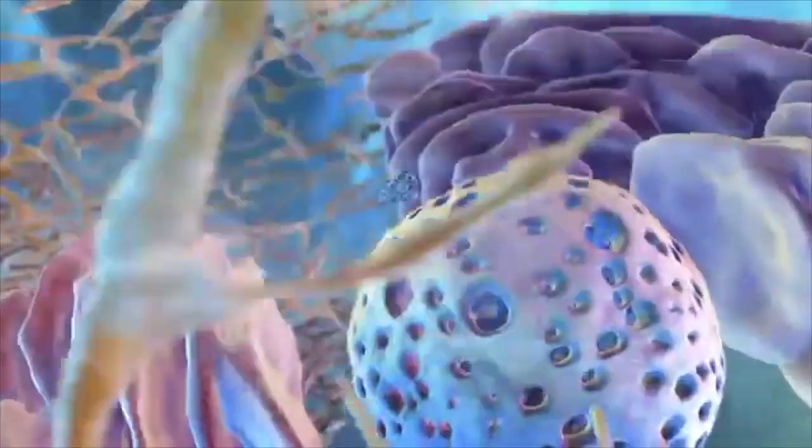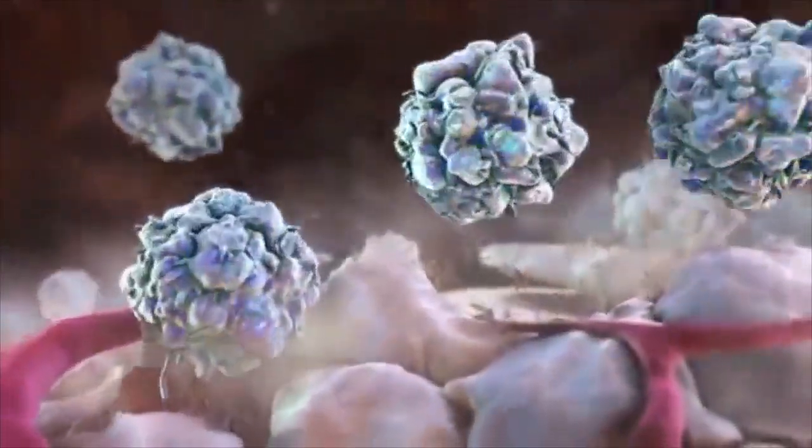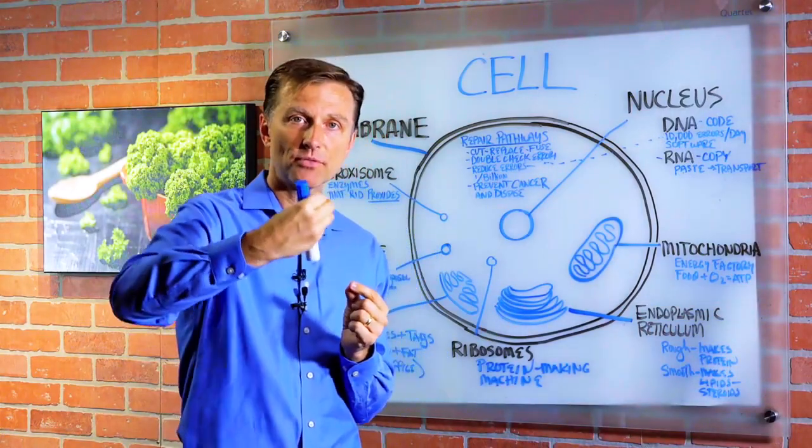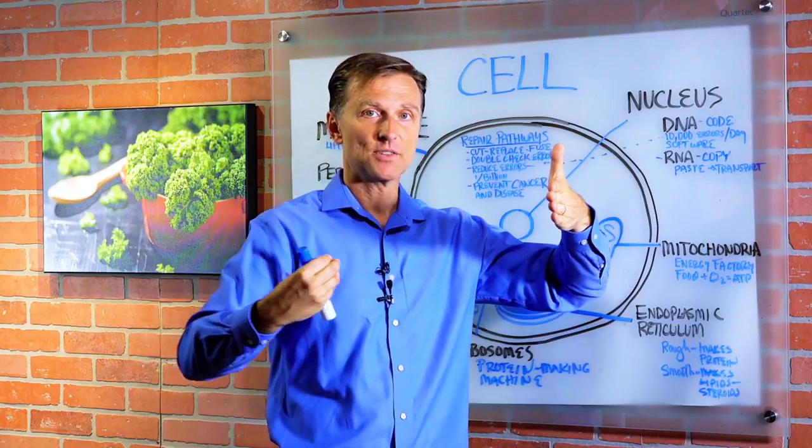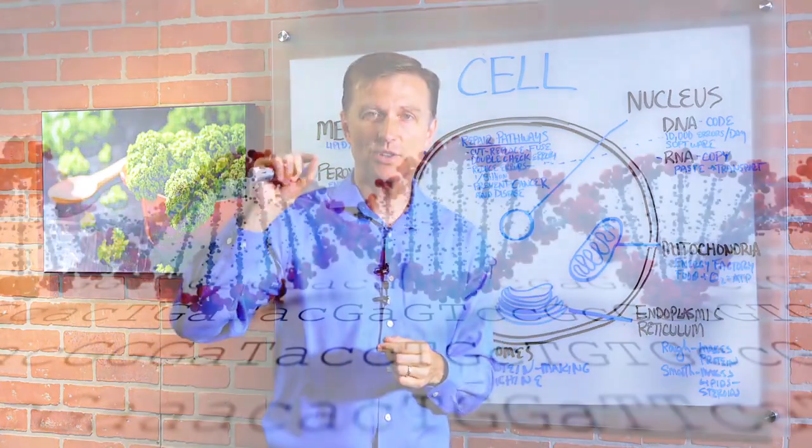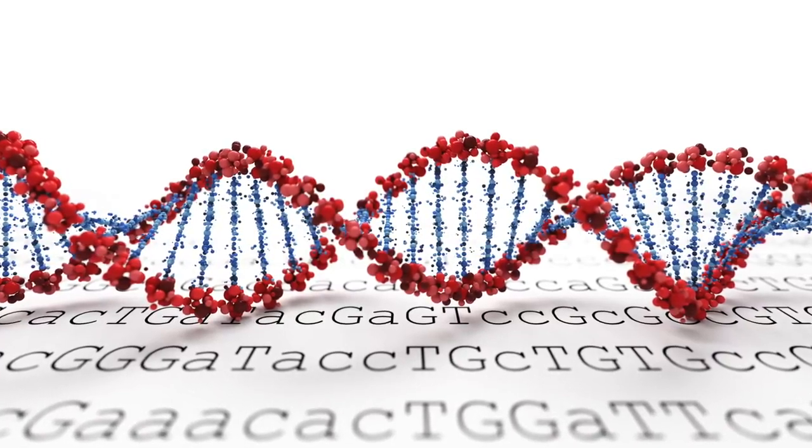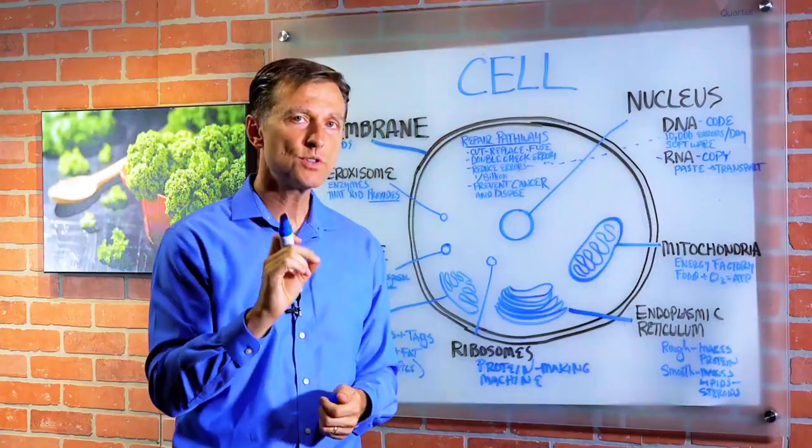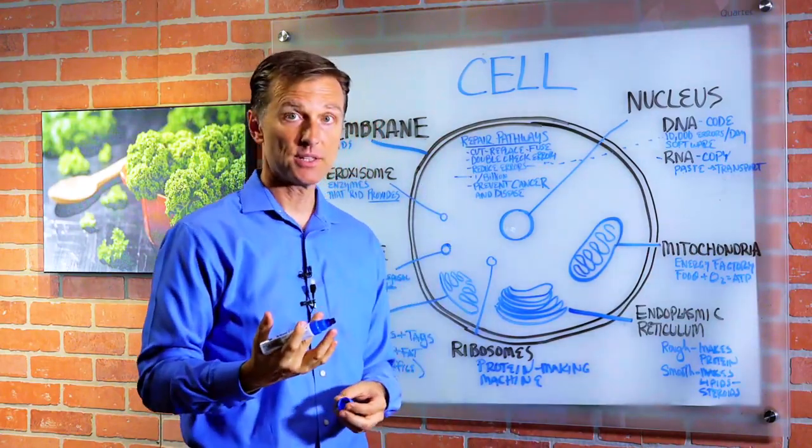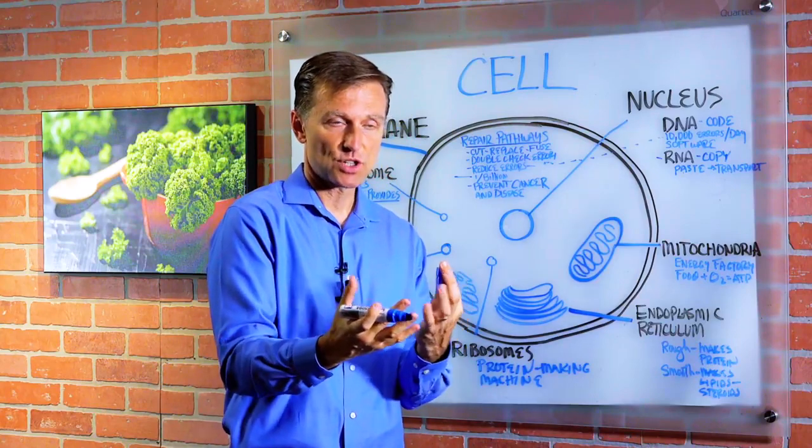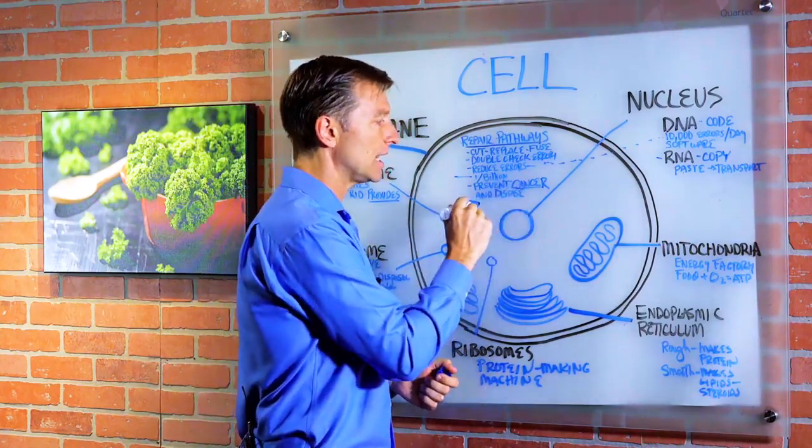Then what it'll do, it'll cut out the section of errors, replace it with new one, or fuse it together. And then there's another proofreader unit that comes behind the initial proofreader to make sure they didn't make any errors to look and read the code to make sure it's exact. And they also have the capacity to cut out the bad code, put in the new code, and replace it to the point where you can reduce the errors to one in a billion. This is incredible because if these errors are there, you have these mutations, which are alterations in the code, and that can lead to cancer and a lot of other diseases.